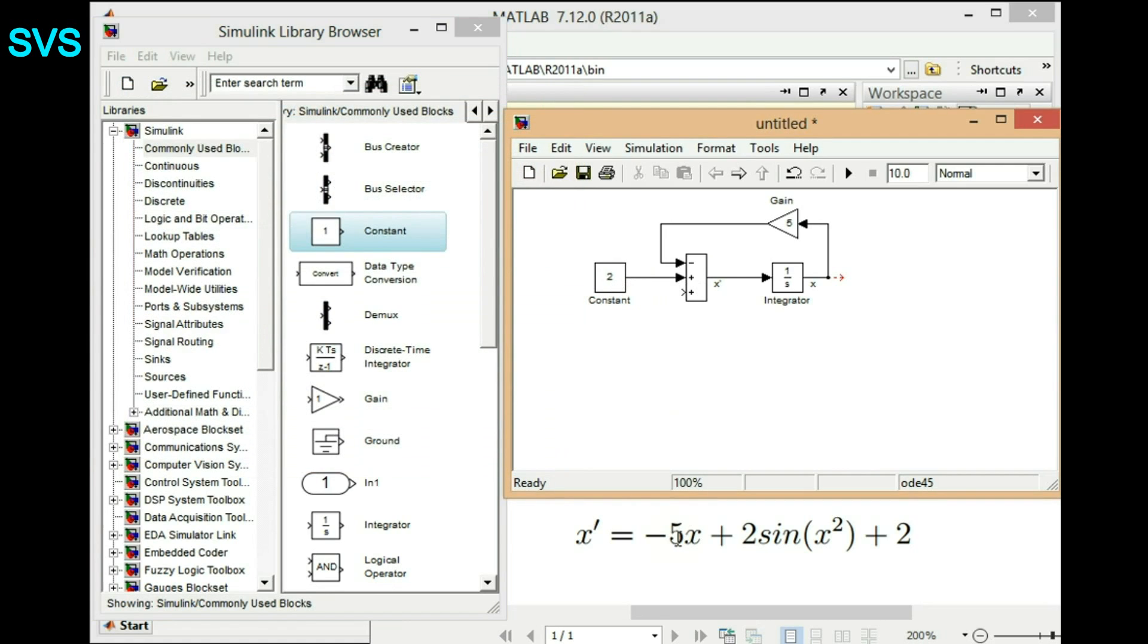And the last part which is the trickiest part, that is 2 sine x squared. To implement this will require a gain of 2, a trigonometric function sine, and then x squared which is a mathematical operation. So we'll require three blocks over there. We'll just copy it, a gain block. You can just right click on the block and then drag it, it will directly get copied.